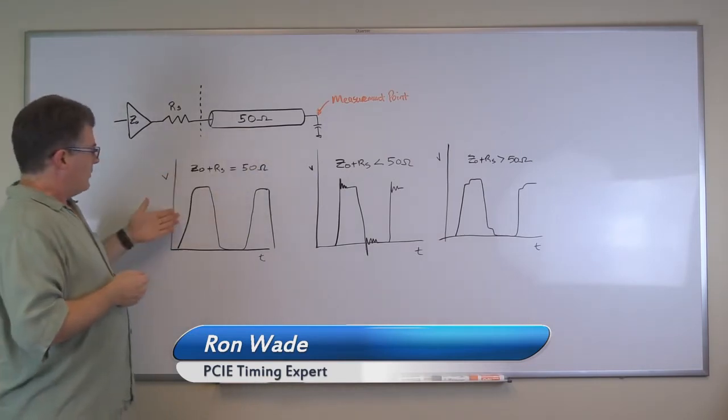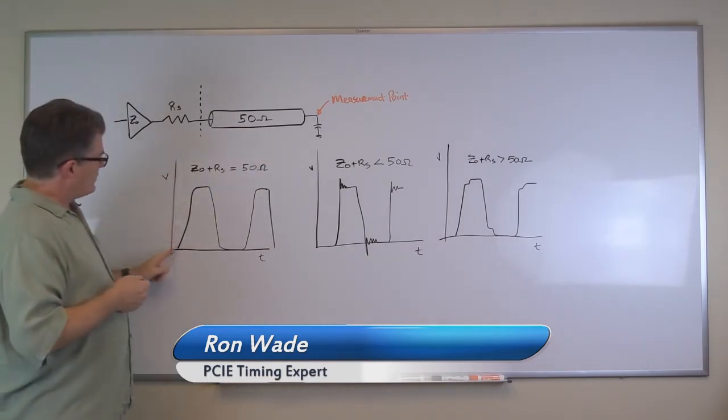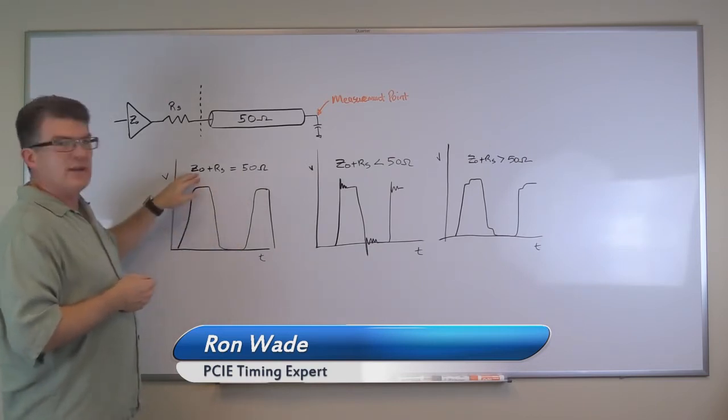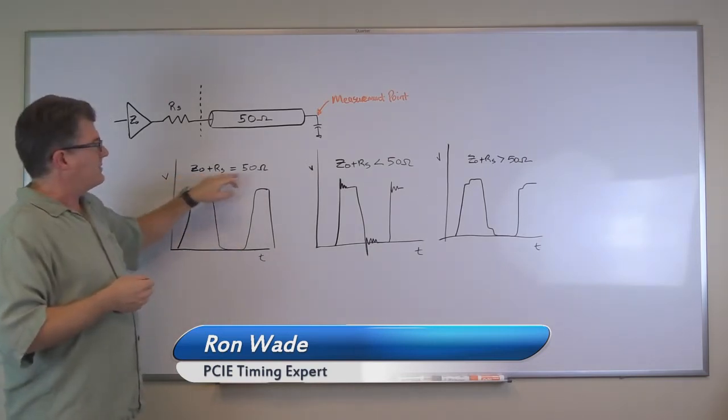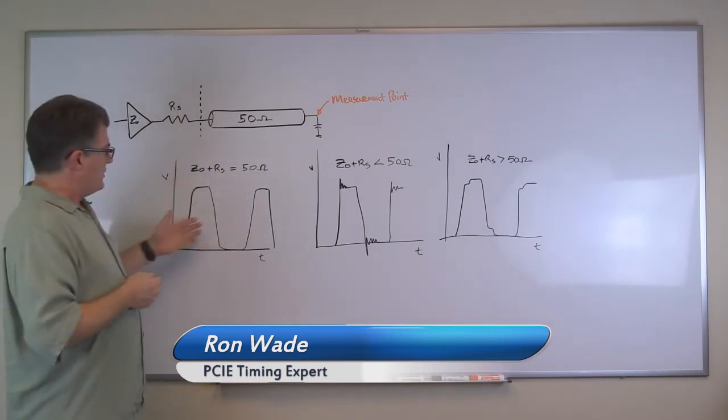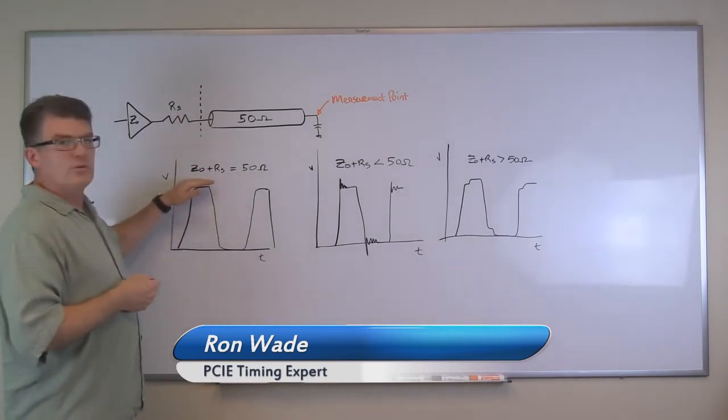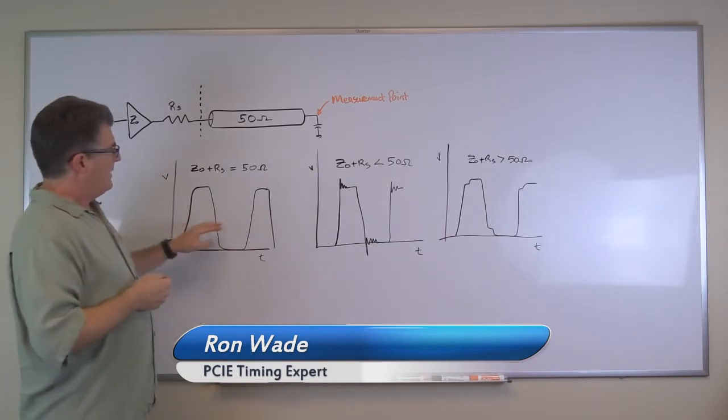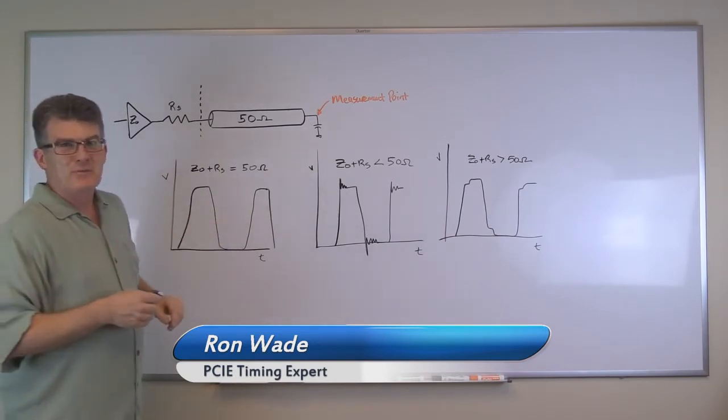When we do that, we have a perfectly nice clock which comes up, rounds off, goes down, and goes back up again. That's the case for Z naught plus RS, the series resistor, equals 50 ohms. You can see it's a great clock—there's no overshoot, no undershoot, the tops and bottoms are flat. Ignore the duty cycle because that's my handwriting.